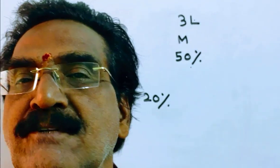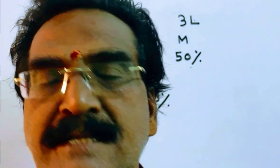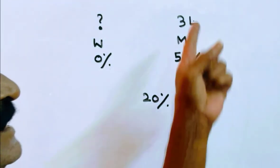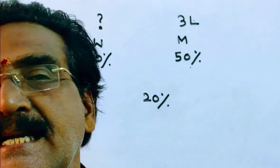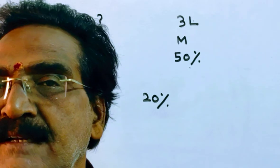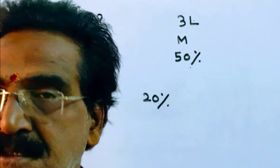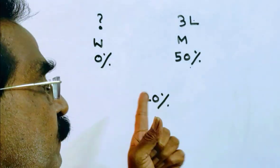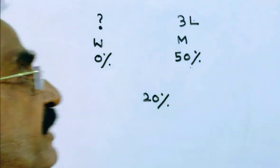Good morning friends. Please look at the next problem in allegation and mixtures. In a three-litre mixture of water and milk, milk is 50%. The question is: how much water must be added to this mixture so that milk is 20% in the final mixture?